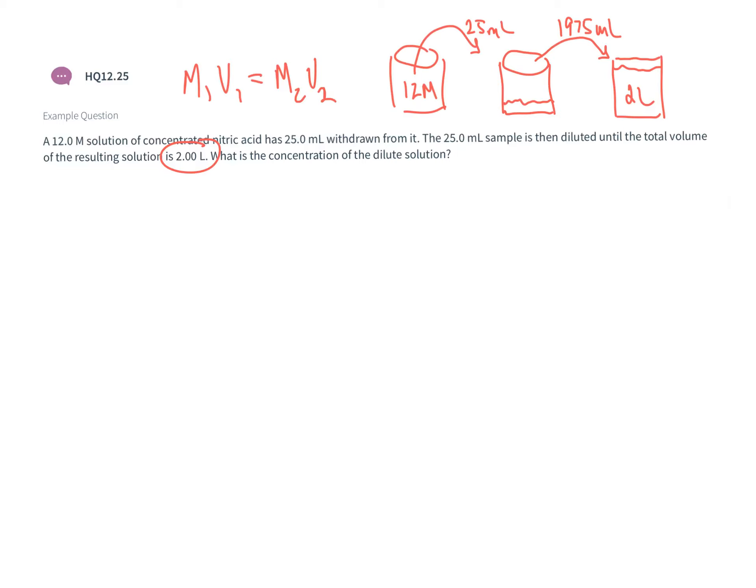For the calculation M1V1 equals M2V2: the molarity of my first solution is 12 molar, I take 25 milliliters of that solution, and that equals the unknown molarity of the second solution times the volume. My second solution is 2 liters, which is 2000 milliliters. Multiplying 12 and 25 together, I get 300.